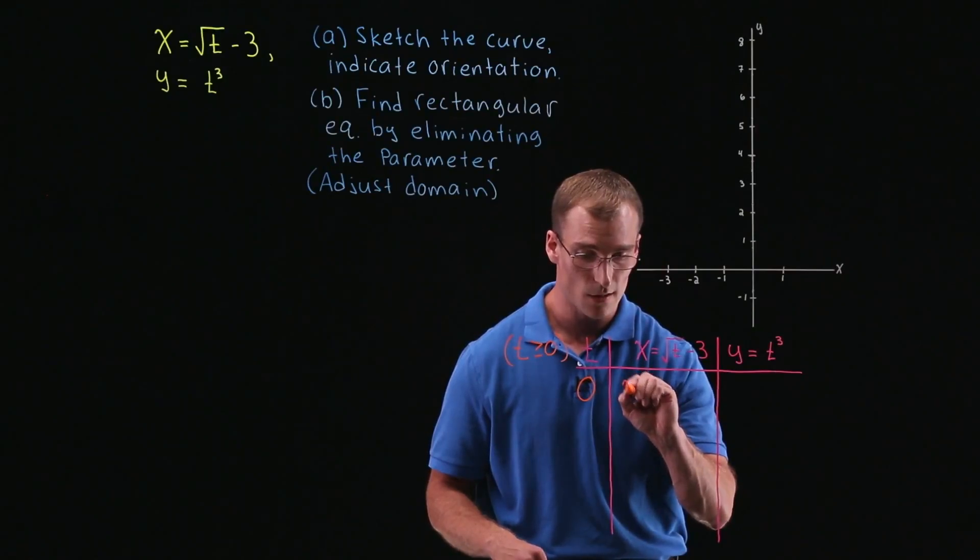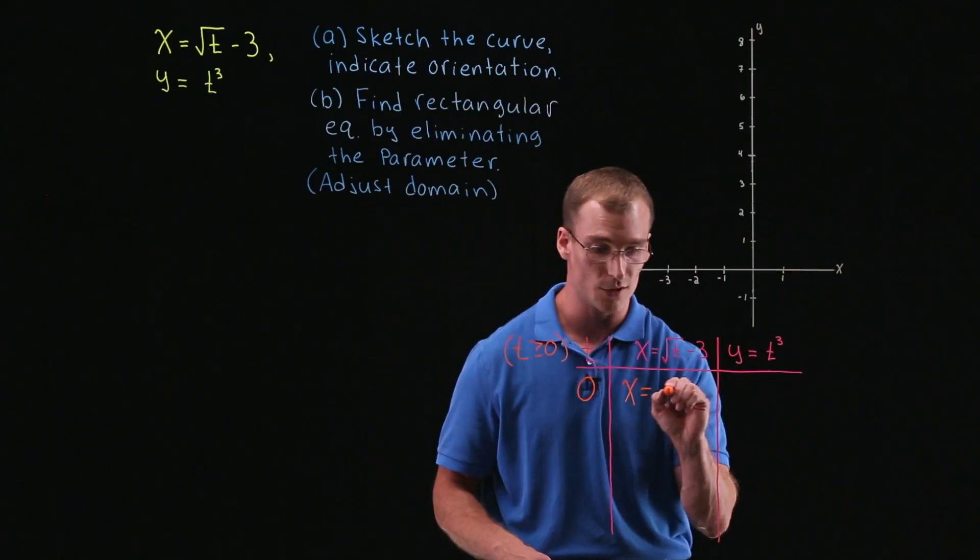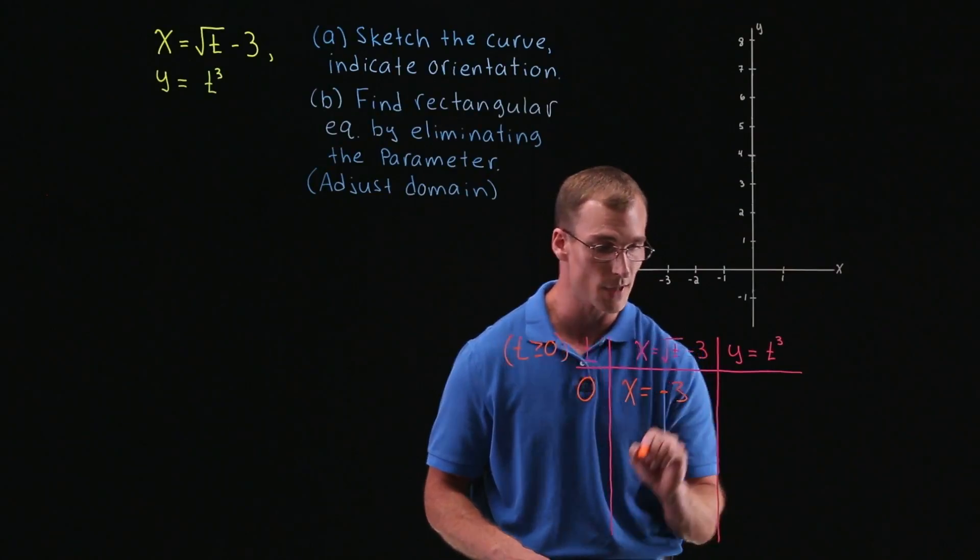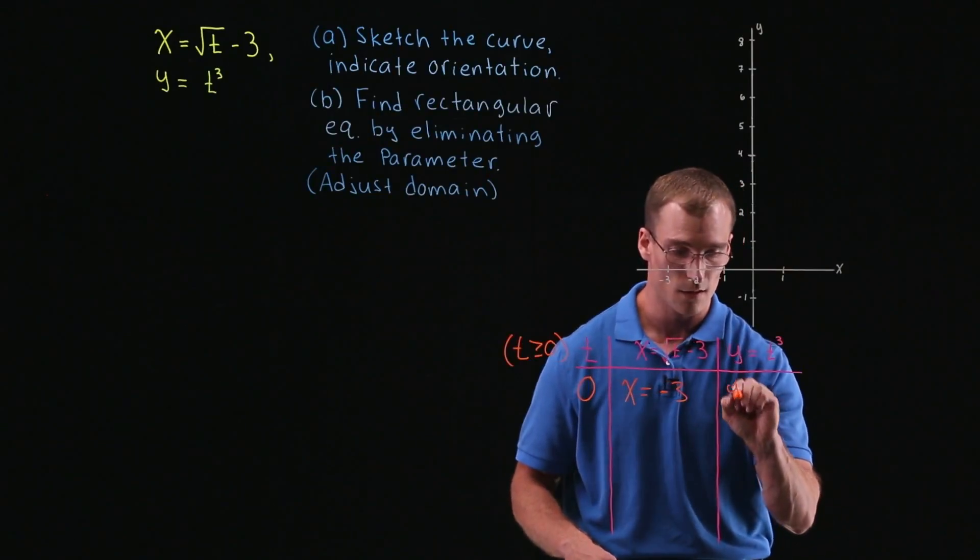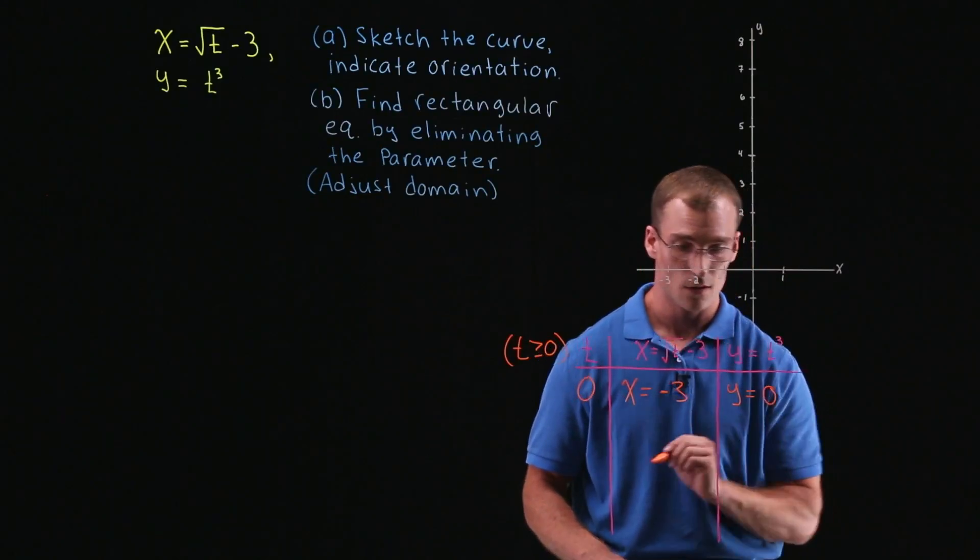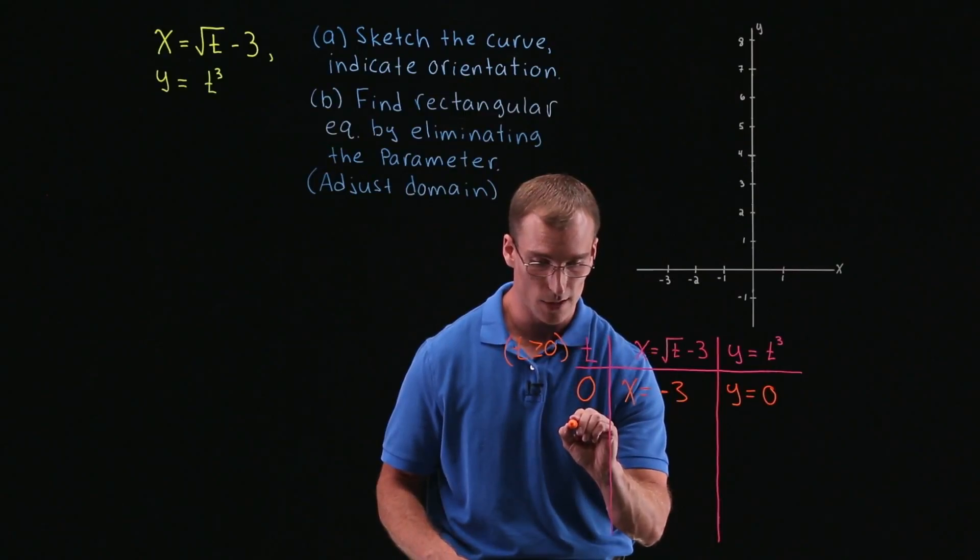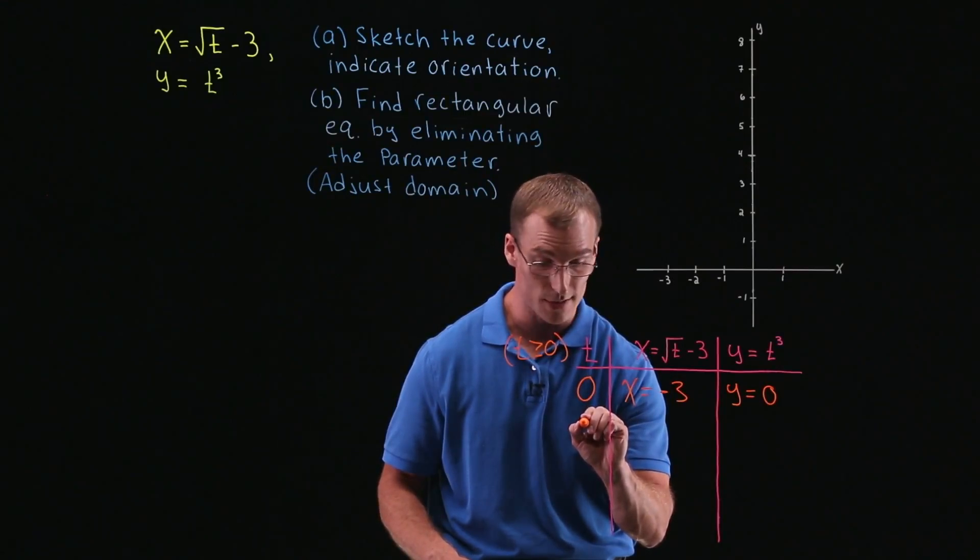So that is going to be x is equal to square root of 0 is just 0, so x is equal to negative 3. And then y is equal to 0 cubed, or just 0.